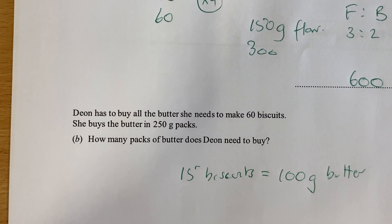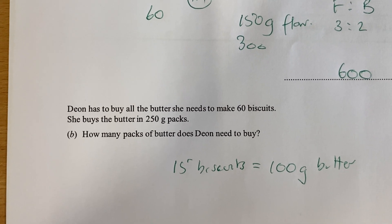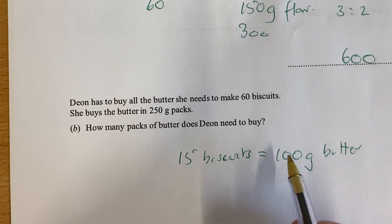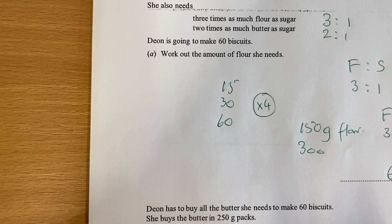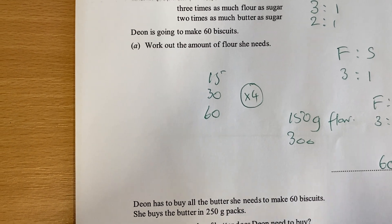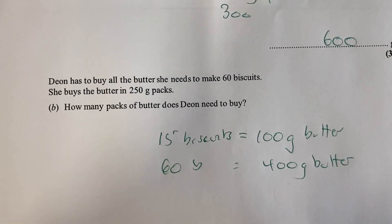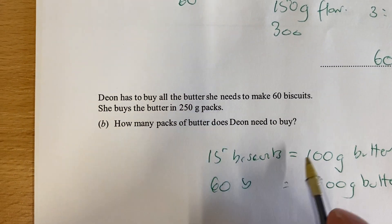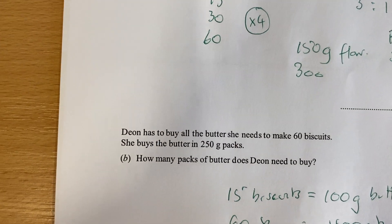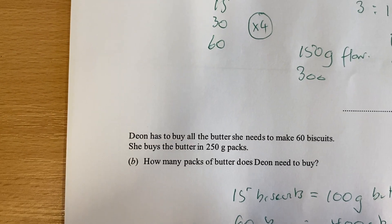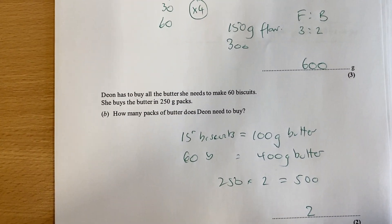She can buy the butter in 250 gram packs. How much butter do I need overall? For 60 biscuits it's four times again, so I need 400 grams of butter. It comes in 250 gram packs, so that's two packets — because 250 times two is 500, and clearly I need at least two packs to cover 400 grams.